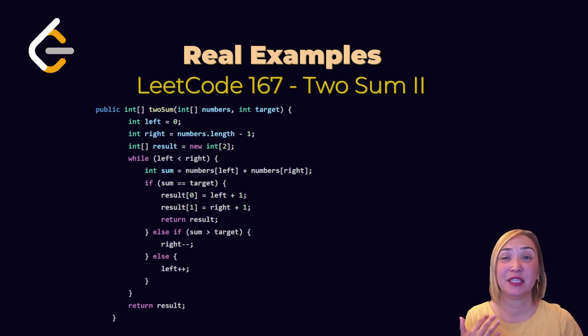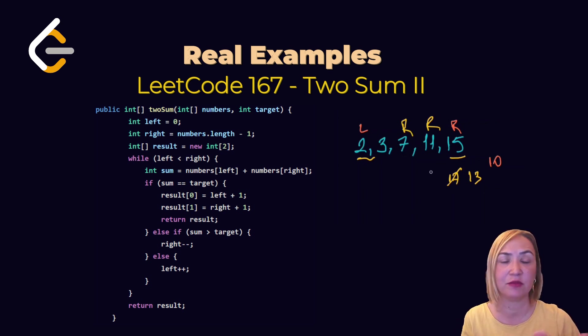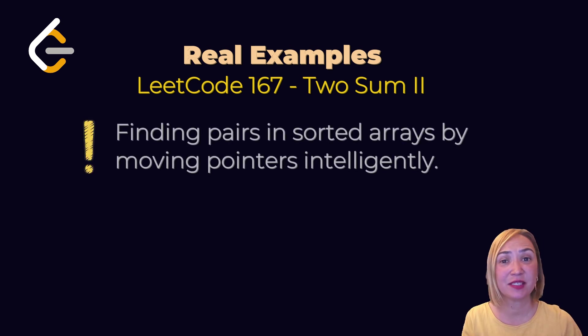Two sum sorted: If sum is small, move left pointer. If sum is big, move right pointer. Define two pointers, left and right. While left less than right, calculate the sum of left values and right values. Compare the sum with target. If target equals sum, we found the result. If sum is less than target, increment left. If sum is greater than target, increment right. Finding pairs in sorted array by moving pointers intelligently.